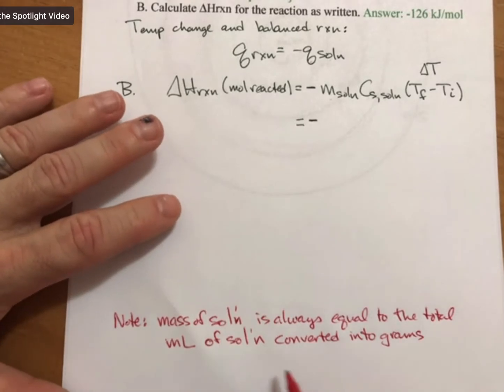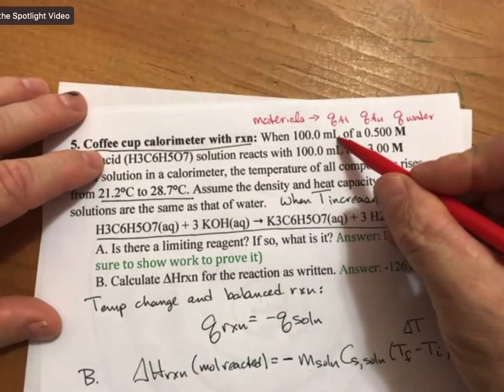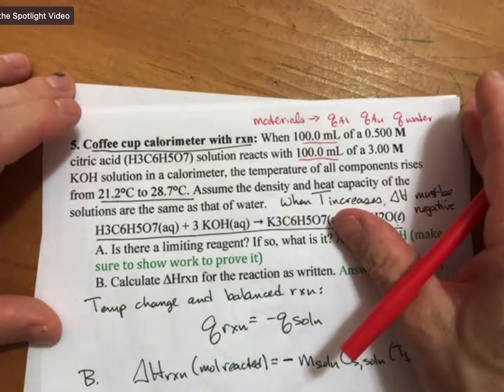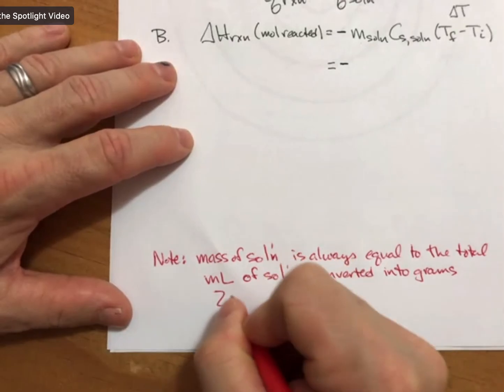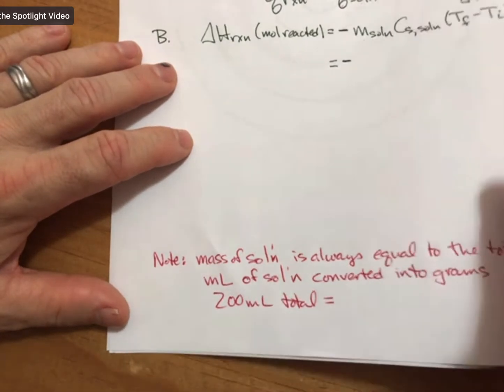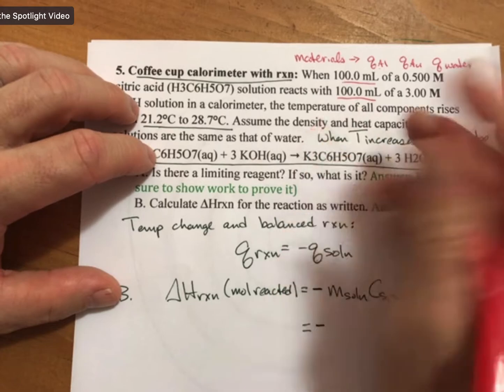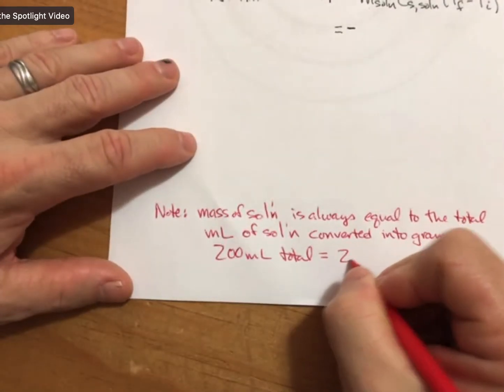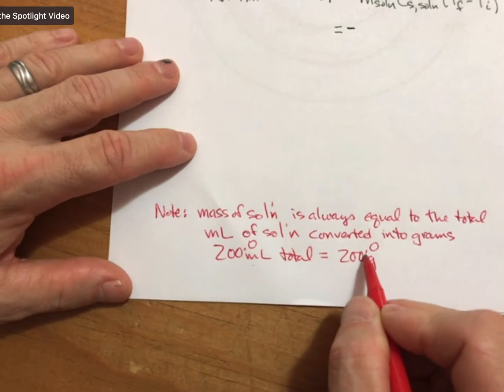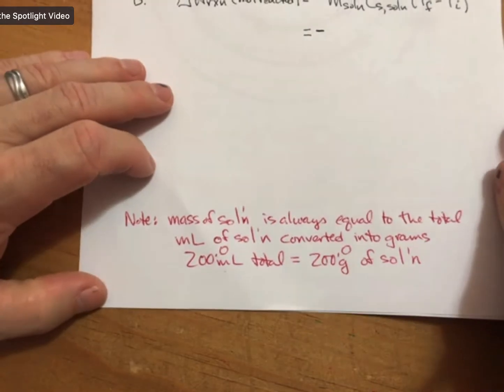And what I mean by that is, in this problem statement, it says we have 100 milliliters that reacts with 100 milliliters, so that's 200 milliliters total, and since it says that we may assume the density of water, and water is 1.00 grams per milliliter. So 200.0 milliliters total equals 200.0 grams of solution.